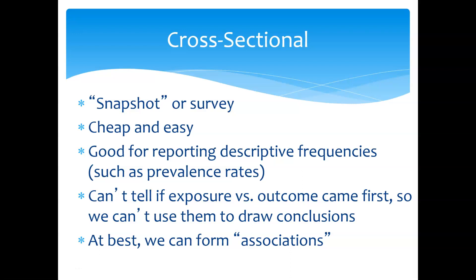First, let's look at the observational types of data collection. The first is cross-sectional data collection, where we get a snapshot or survey — it is a one-time deal where we collect data to find out about things within a certain time. Surveys are a good example and generally the way that we get cross-sectional data. These are attractive because they're cheap and fairly easy, and they're very good for reporting descriptive frequencies such as prevalence rates. For example, we could do a survey on smoking and find out how many students smoke — just send a survey to every student on campus and you would have a cross-sectional demographic of the prevalence of student smoking.